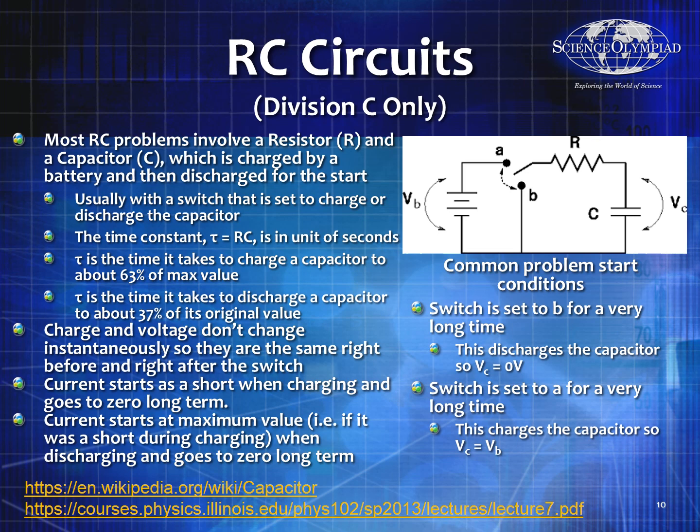When discharging, the capacitor starts at the maximum value. Whatever that maximum voltage is, V divided by R is the current it starts at. Then it slowly decreases as it discharges, going to zero in the long term.